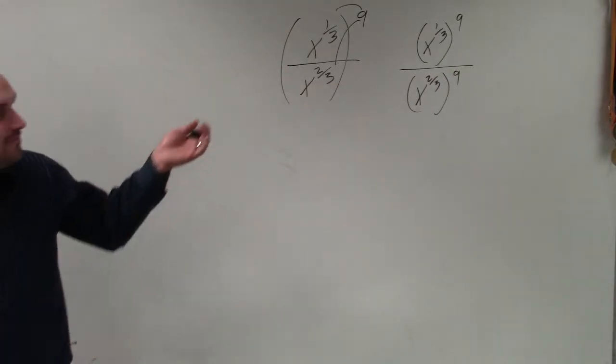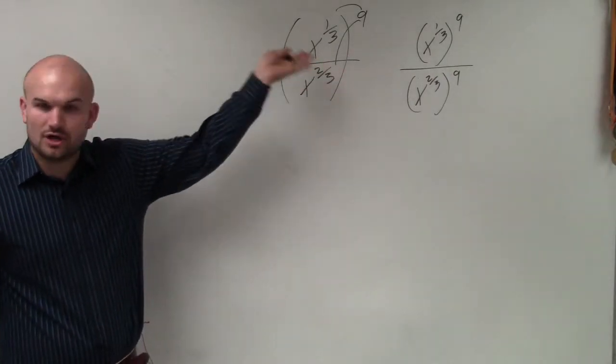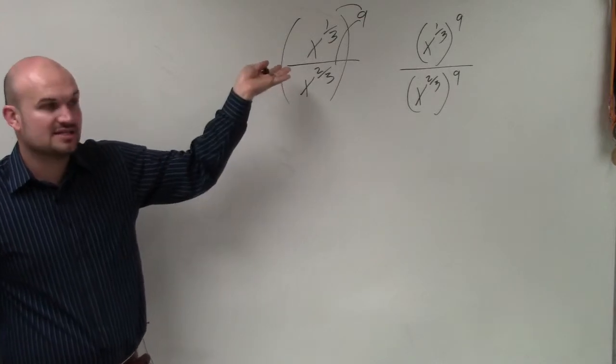Now we have an exponent raised to a power, which is called the power rule. And the power rule tells us to multiply them.